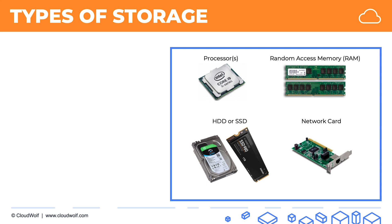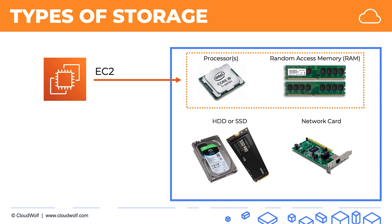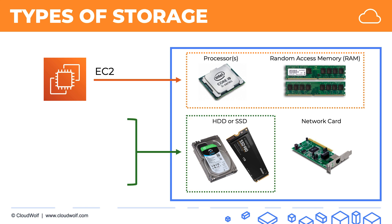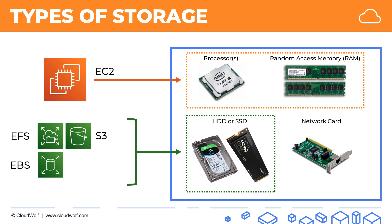In terms of Amazon Web Services, your EC2 instance represents the processor plus the RAM. And in regards to HDD or SSD you have several options: there's the Elastic File System, there's the Simple Storage Service or S3, there's the Elastic Block Storage and there's the Instance Store. Let's look at them individually.